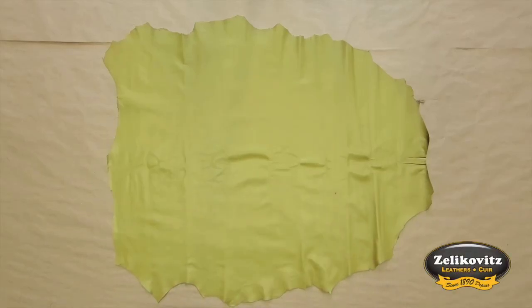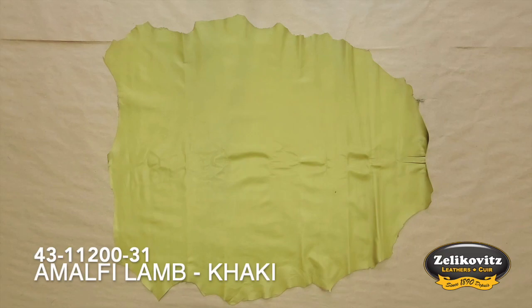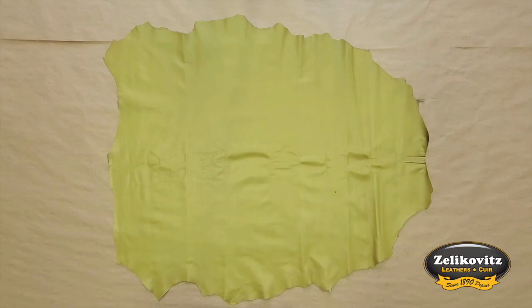This is a 1.5 ounce chrome tanned Italian lambskin called Amalfi. This color is called khaki but I would also describe it as being a light olive color.